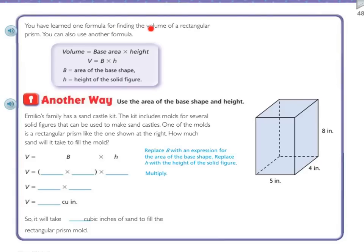Okay, you've learned one formula for finding the volume of a rectangular prism, and now we can also use another formula. So volume equals base area times height. Volume equals base times height. So the base equals the area of the base shape, and then the height is the solid figure. So like right here, this bottom is the base. So it's like saying 4 times 5. That would be my base. And I multiply that base times the height, and I would get the volume.